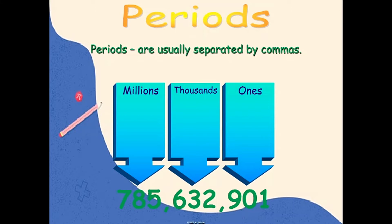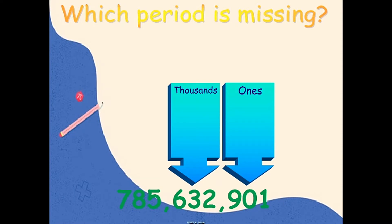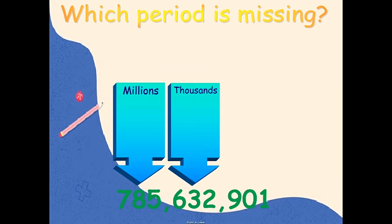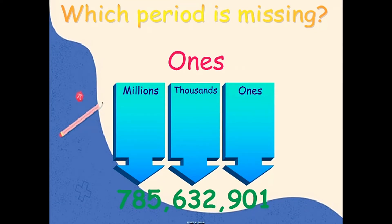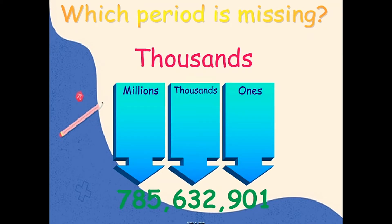Now let's have a short activity about periods. Your job is to identify the missing period. What is the missing period? Very good — it's millions. Second, what is the missing period? Ones, exactly. And next, what is the missing period? Thousands. Again, we have three periods: ones, thousands, and millions, separated by commas — one comma between thousands and ones, and another comma between millions and thousands.